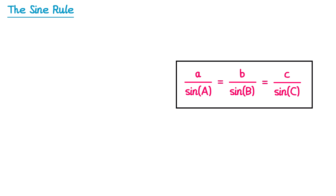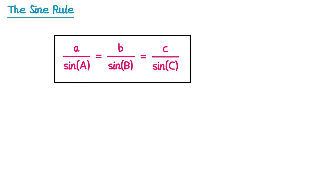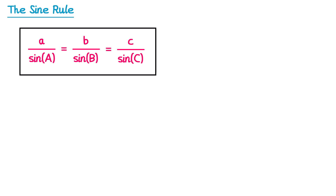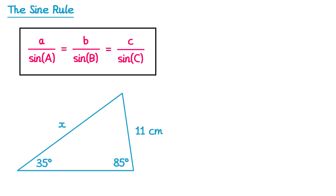You can use the sine rule for any triangle, and we're going to use it now to find a missing side. Even though the sine rule has letters A, B and C, very rarely do you need all three. In almost all cases you just need to use A and B.